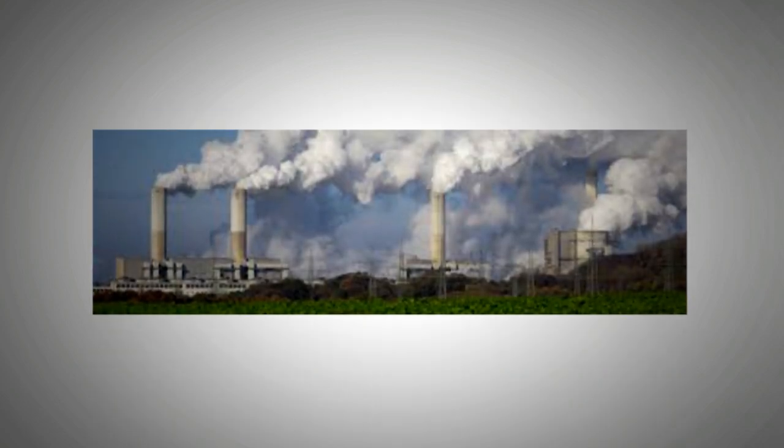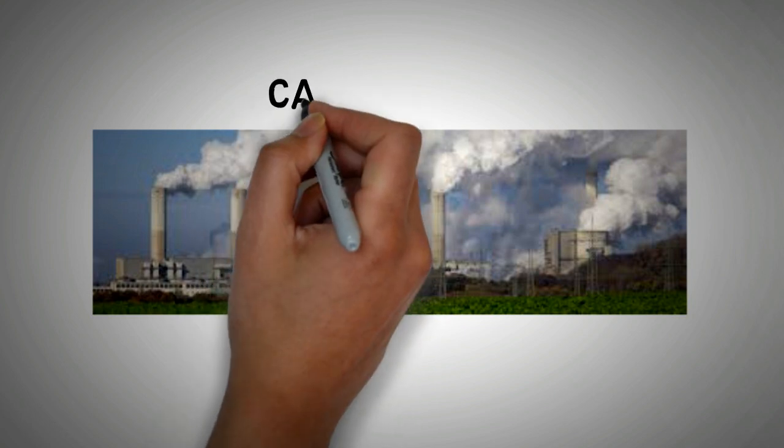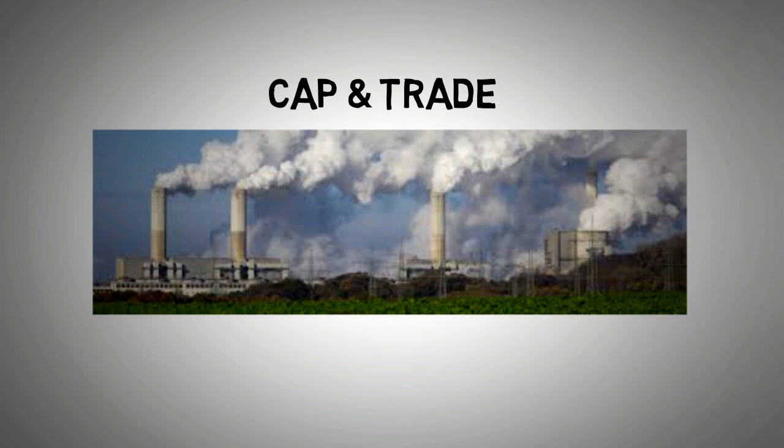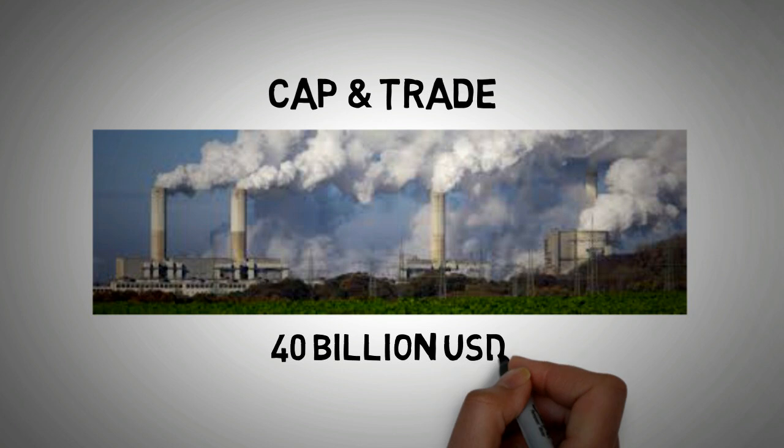To inhibit pollution and to incentivize emission saving, government backed scheme called cap and trade or emission trading was formulated. Since its launch, the cap and trade market has grown over 40 billion US dollars. Emissions trading market has fluctuated and has been criticized at times for favoring the polluters because of creative accounting practices. Nonetheless, for cap and trade market to work, carbon emissions have to be accounted, and therefore there is a lot of work in this area that will grow in the future.